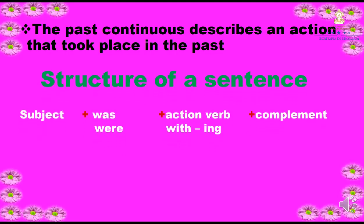Let's see the structure of a sentence in past continuous. Cuando hablamos de estructura es hablar del orden de esa oración. Subject plus was or were plus action verb with -ing plus complement. Sujeto, que es de quien hablamos en una oración, que puede ser persona, animal o cosa, más el verbo to be en pasado, was or were, más el verbo acción con -ing más el complemento.